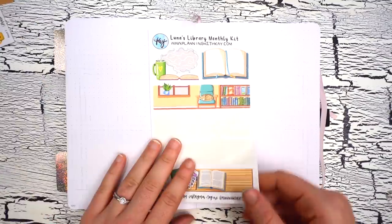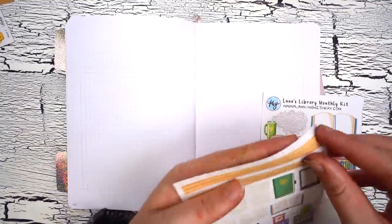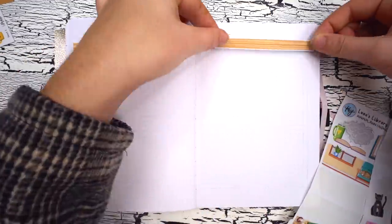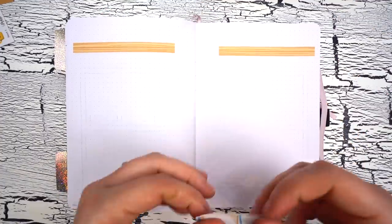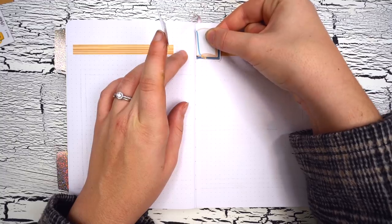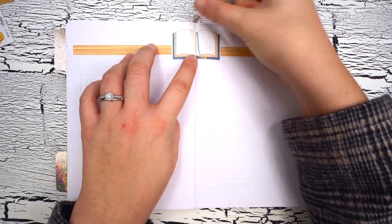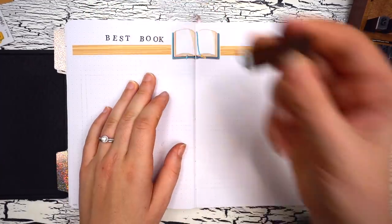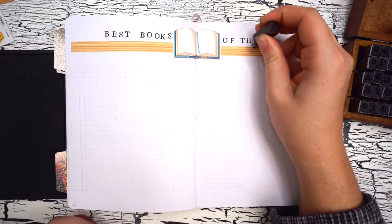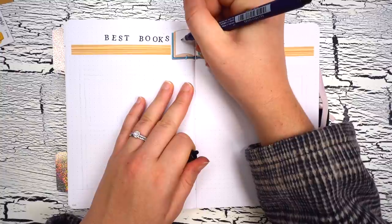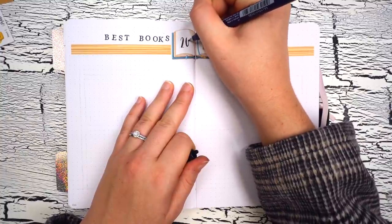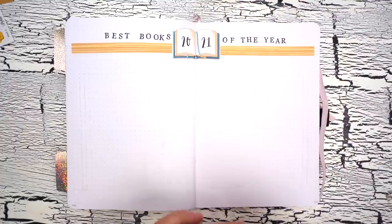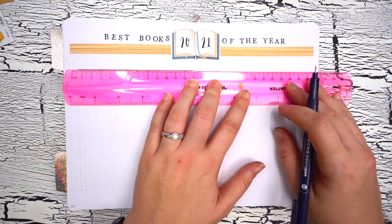Okay, so going into this setup with a book theme, I knew that I wanted to do at least one book-related spread and I thought that given that this is my December setup it would be the perfect opportunity to do a spread showcasing my favorite books of 2021. So that's exactly what I decided to do: a spread titled 'Best Books of the Year for 2021,' and this is by far my favorite spread in this setup. I started off with the header at the top and I absolutely love how this header turned out with the two wooden planks on either side and the big open book right in the middle, and all three of those stickers are from the Luna's Library monthly kit.